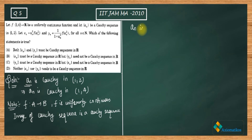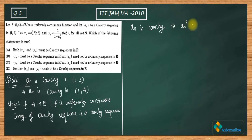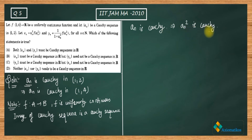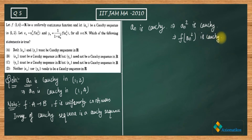Since {an} is Cauchy, it follows that {an²} will also be a Cauchy sequence — it is easy to prove that the product of two Cauchy sequences is Cauchy. Now since f is uniformly continuous, we can say that f(an²) is a Cauchy sequence.